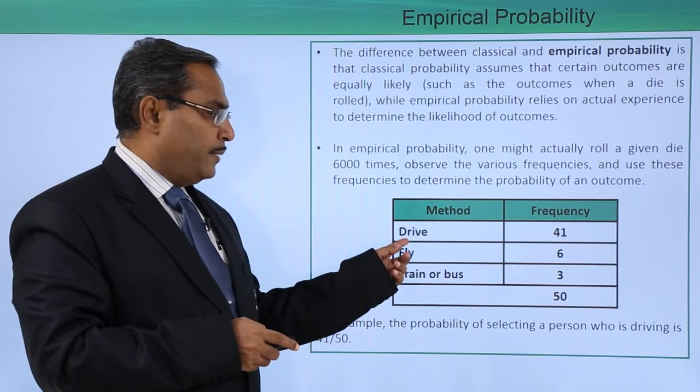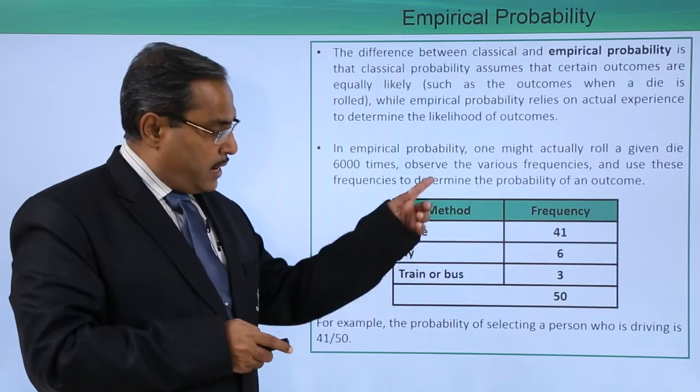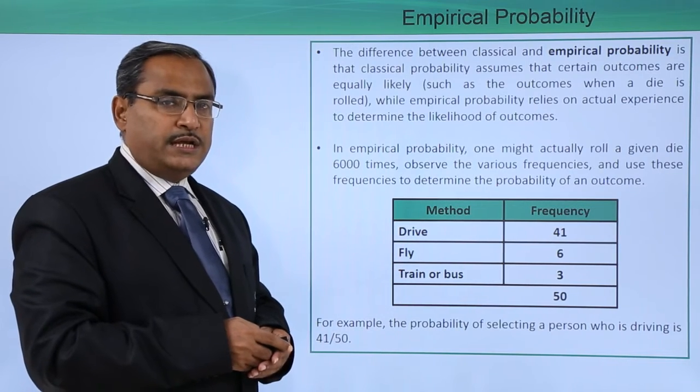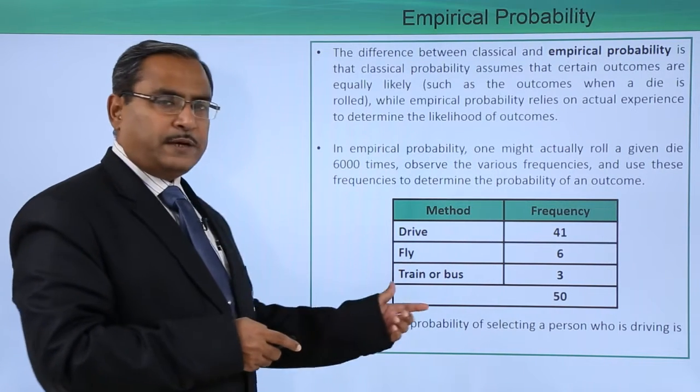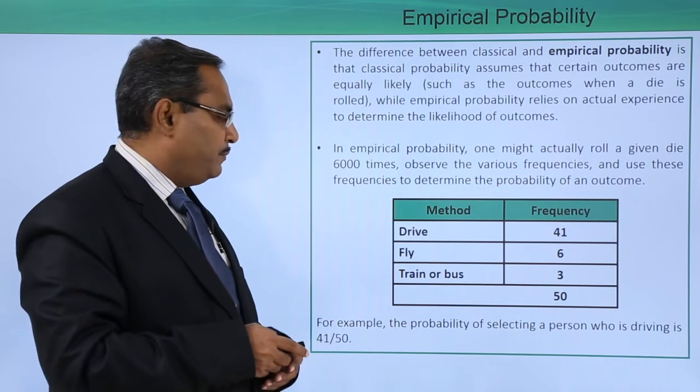In this way, because here we are having drive with frequency 41, and the sum of all frequencies is 50, the probability that a person will drive will be 41 by 50.